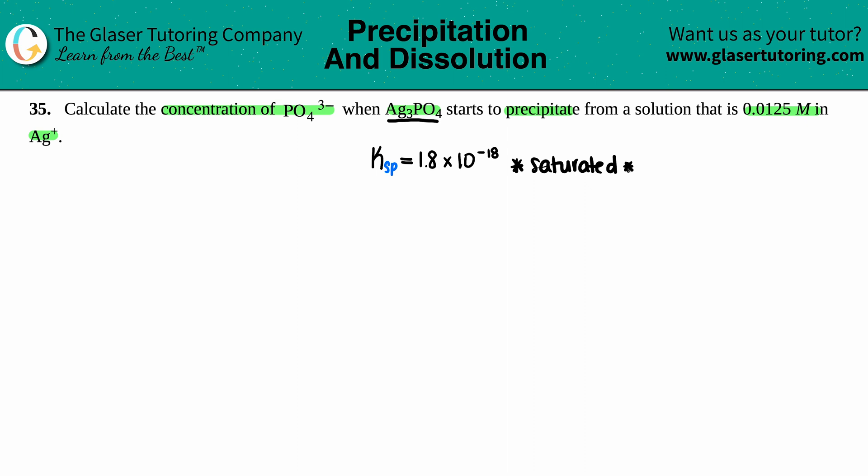Here they gave us the key term that we're starting to precipitate, we're starting to make a solid. That's a saturated solution, so I can use this Ksp. Now what is a Ksp without a balanced equation? It's nothing.